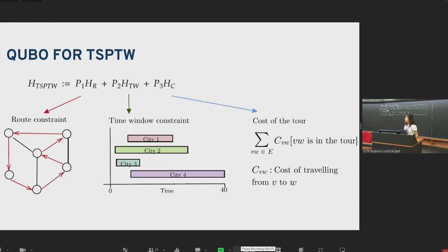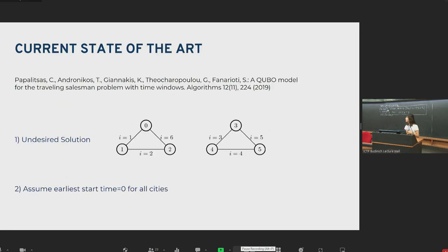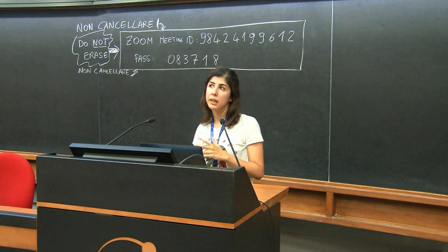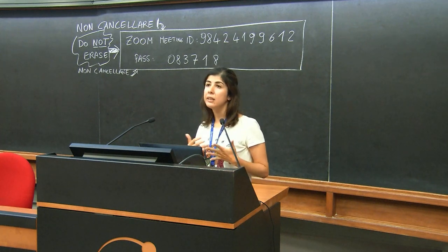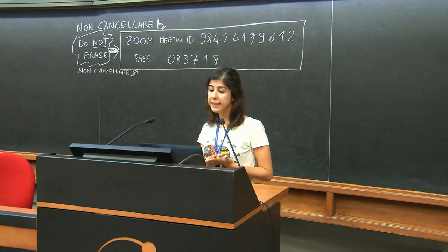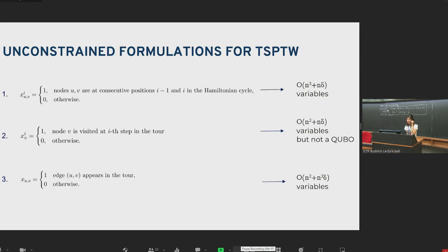Now, to formulate a QUBO formulation for TSP with time windows, we need to consider three things. First, we need to have a route that visits each city exactly once. Secondly, this route should obey the time window constraints. And thirdly, we need to minimize the total cost of the route. The state of the art before our work was due to Papalistas. They had a QUBO formulation, but the problem was it was possible to obtain solutions which consisted of sub-tours, but we need a closed single tour. Furthermore, they had an assumption that earliest start time is equal to zero for all cities, and they did not allow any waiting times.